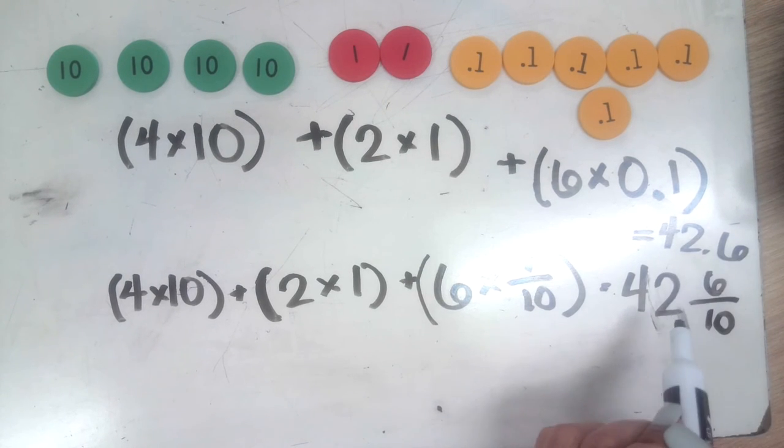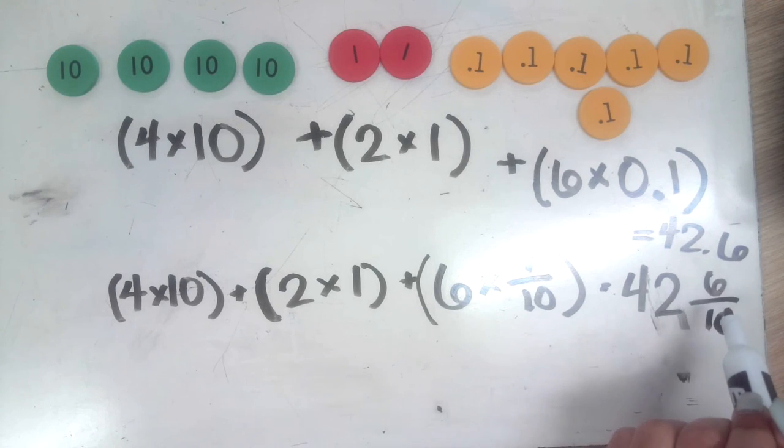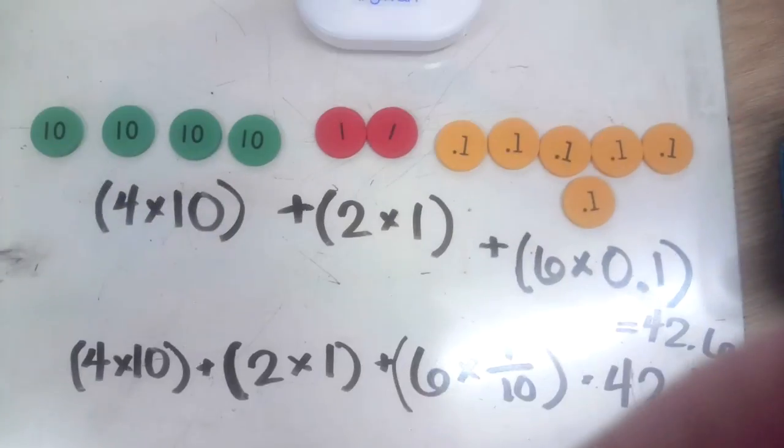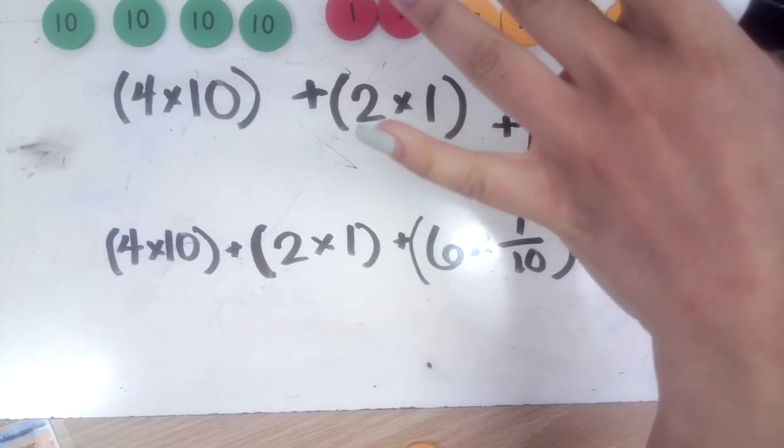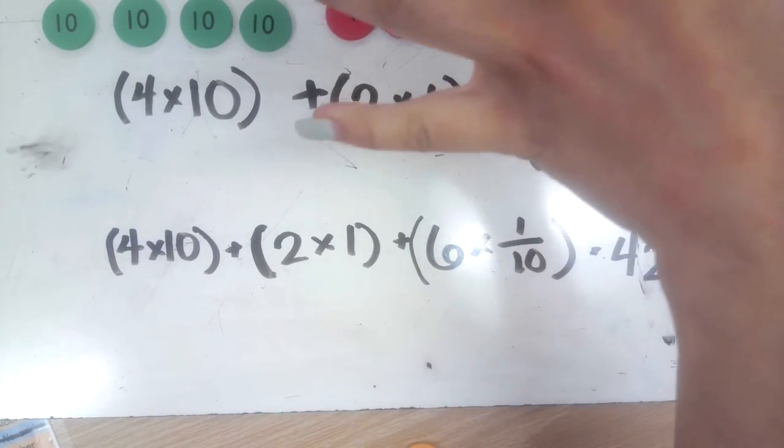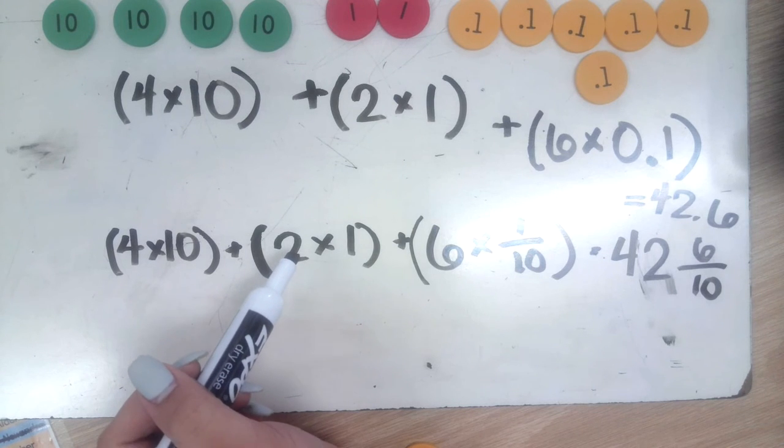We already know that one tenth as a fraction is the same as one tenth as a decimal, but how does this change my answer? I've still gotten it in expanded form. However, when I record and add all of these together, suddenly my answer becomes 42 and six tenths. Are these the same? One hundred percent.